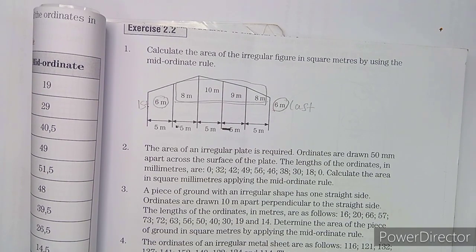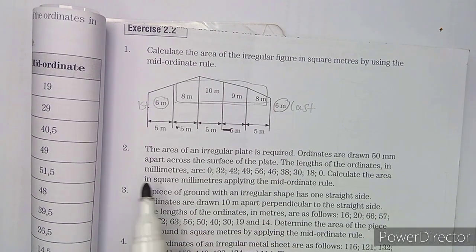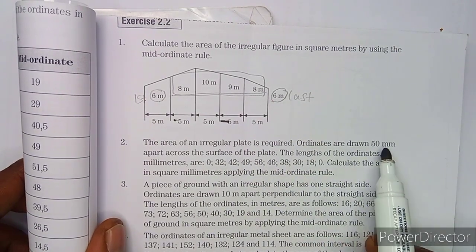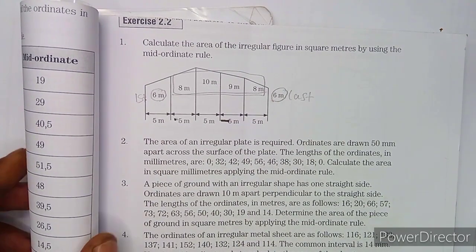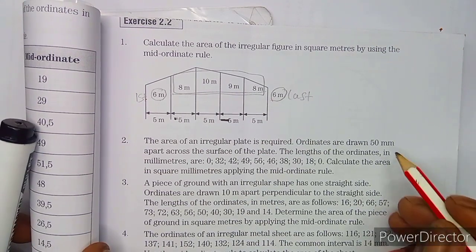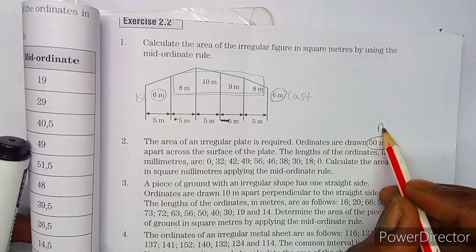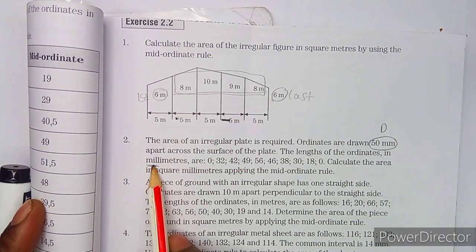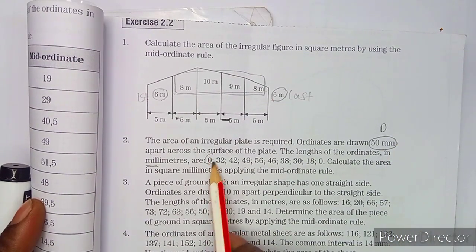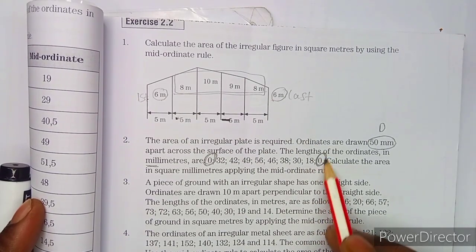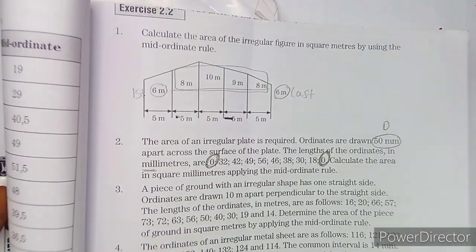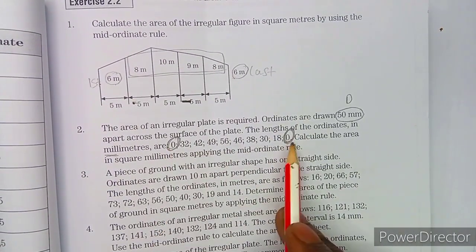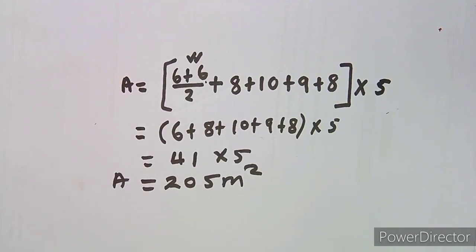Now for number two: the area of an irregular plate is required. Ordinates are drawn 50 millimeters apart across the shape. This 50 millimeters apart is the distance between the ordinates. The ordinates are also given in millimeters. Take note: your first ordinate is zero and your last ordinate is also zero.